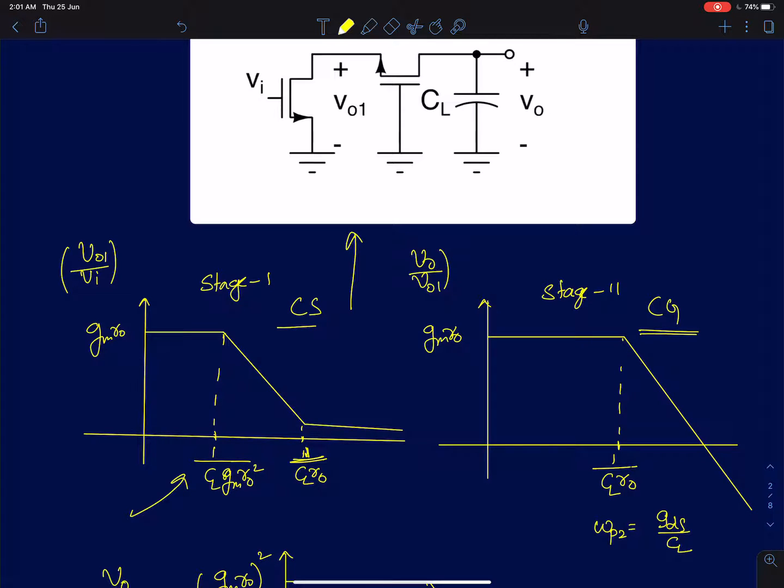This is contrary to the popular belief where the dominant pole actually occurs at the output node. In the analysis we also showed that the first stage actually happens to have a zero at 1 by CL or not, and we approximated the gain at the high frequencies to be very close to 1 or 0 decibels. In the second stage, it has only one pole and that pole happens to be at the zero of the first stage.